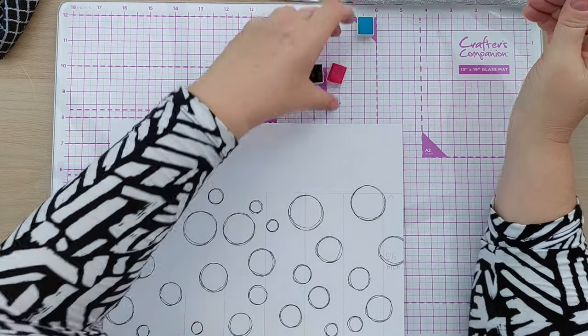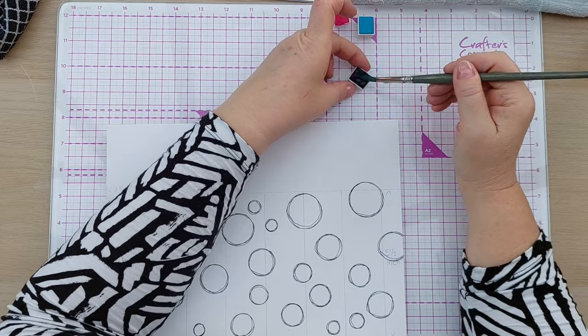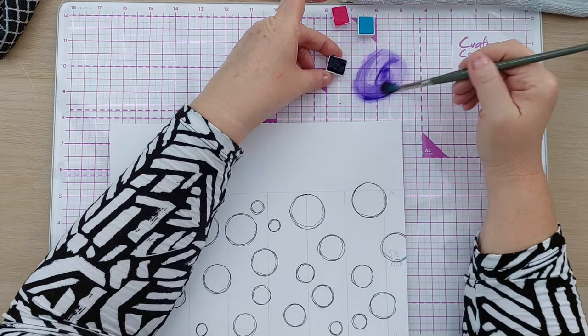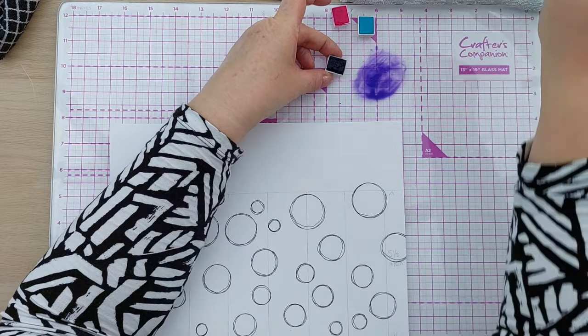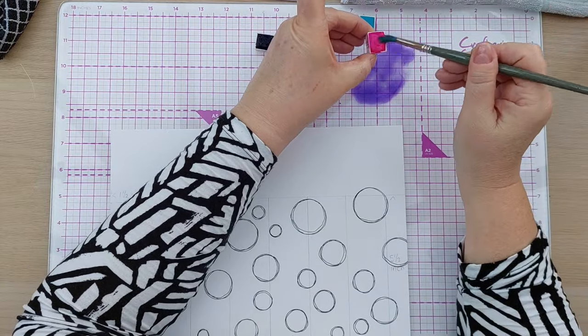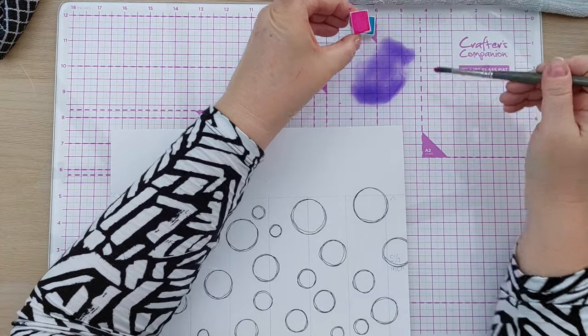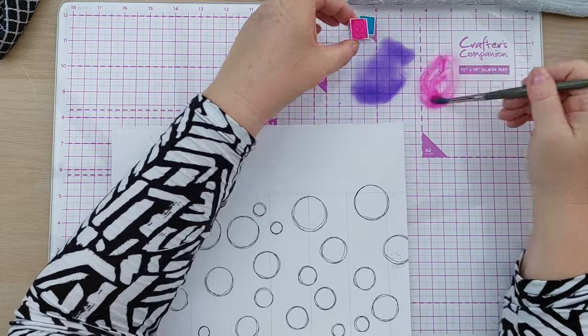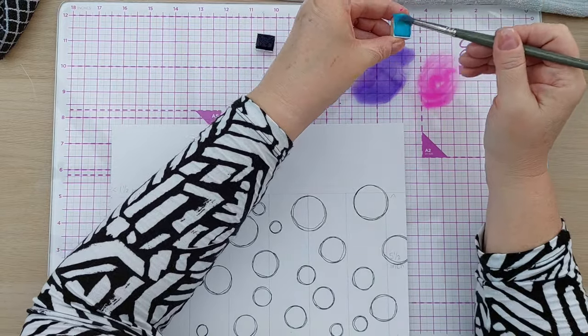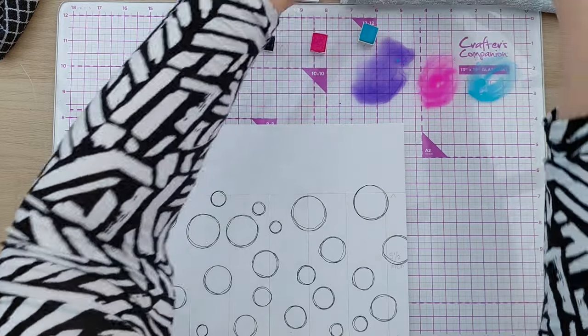So first of all I'm going to make up my paint palette by adding some color to my glass mat here and diluting it with water so it's a nice runny consistency. Same with the pink here, and same with the blue. The predominant color will be purple with some pink and blue highlights.